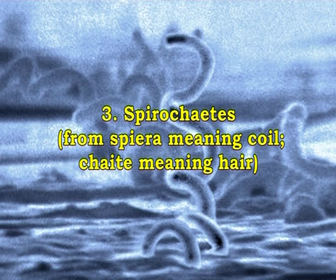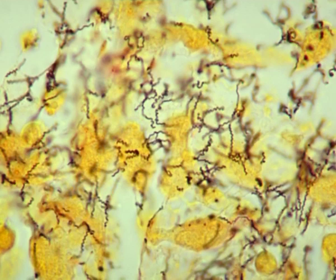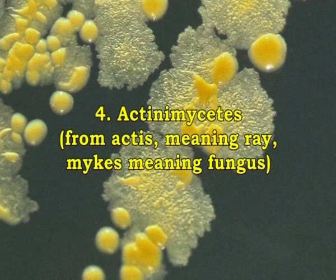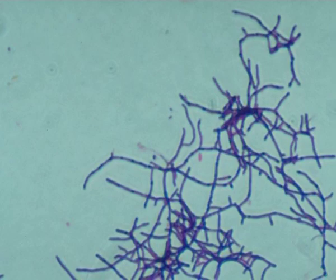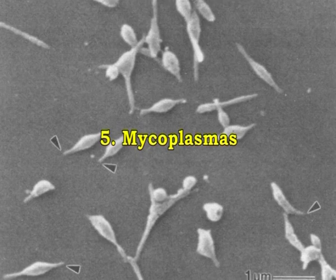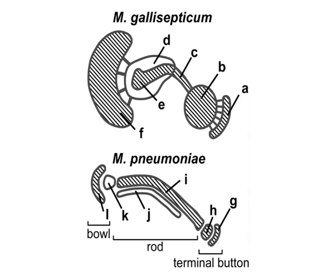Number 3 is the spirochetes — 'speira' meaning coil, 'chaite' meaning hair. These are slender, flexuous spiral forms. Example is Treponema. Number 4 is actinomycetes — 'actis' meaning ray and 'mykes' meaning fungus. These are branching filamentous bacteria resembling fungi. Number 5 is mycoplasmas. These bacteria are cell-wall deficient and hence do not possess a stable shape.